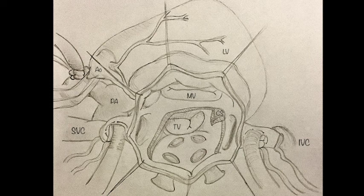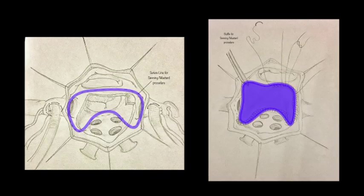Some surgeons remove a portion of the septum secundum in order to facilitate the creation of the superior portion of the pericardial baffle. In step 2, a baffle is created so that the systemic venous flow is redirected to the tricuspid valve, while the pulmonary venous return is redirected to the mitral valve. One edge of the baffle is sutured over the opening of the four pulmonary veins and continues with the superior and inferior vena cava, while the final edge is secured to the anterior end of the atrial septum.